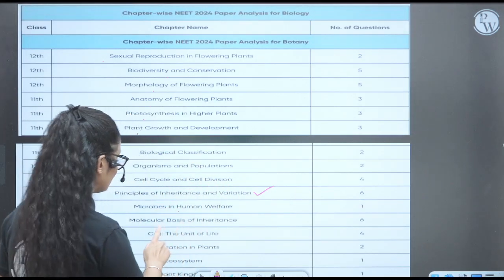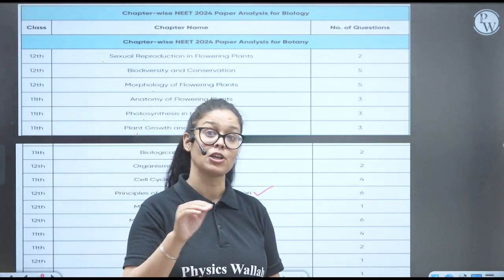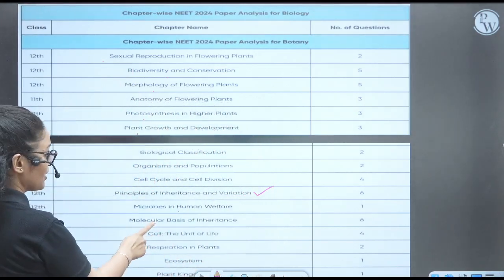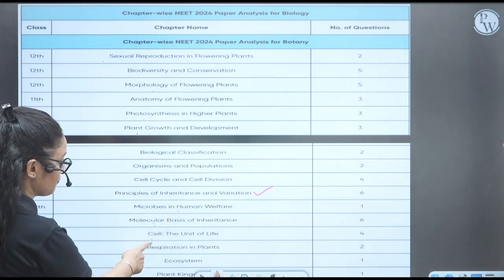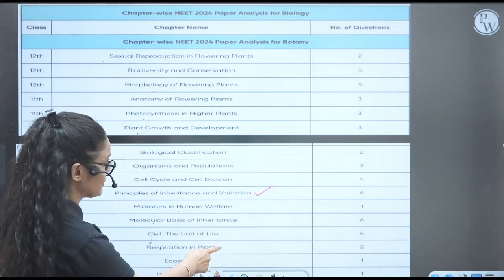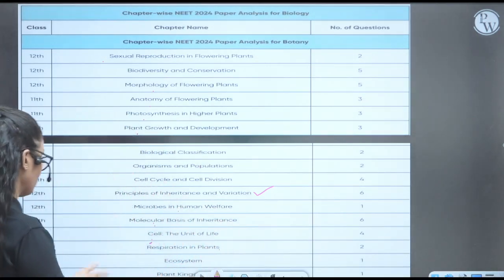Principles of inheritance - six questions. Microbes - one. Molecular basis - six questions. So see, from the principles, from the molecular, they have asked six questions. Total 12 questions from genetics. Cell structure - six questions from the cell alone. And sorry, four questions from the cell alone. Respiration in plants - two questions. Ecosystem - one. Plant kingdom - one only, right?